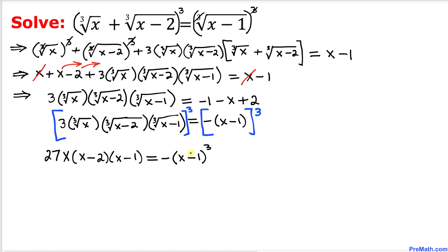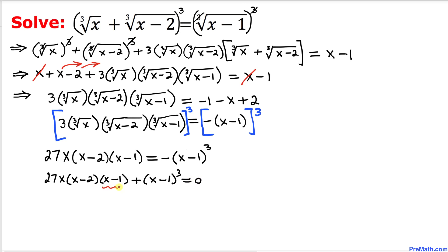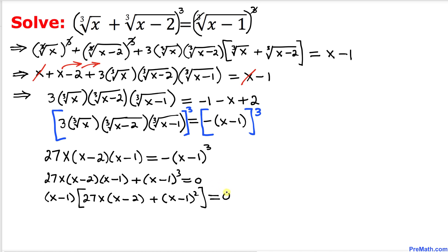Moving everything to the left hand side gives us 27x(x minus 2)(x minus 1) plus (x minus 1)³ equals 0. We can see that (x minus 1) is common to both terms, so we factor it out: (x minus 1) times [27x(x minus 2) plus (x minus 1)²] equals 0.